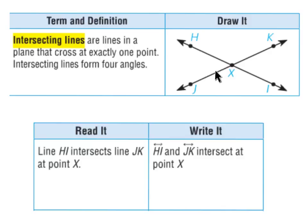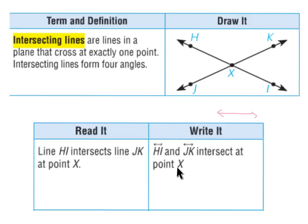We would read it like this: line HI intersects with line JK at point X. You would write line HI — the symbol right above HI is a line with two little arrows on each end, which signifies the word 'line.' Then we have line JK, written the same way, and we say line HI and line JK intersect at point X.